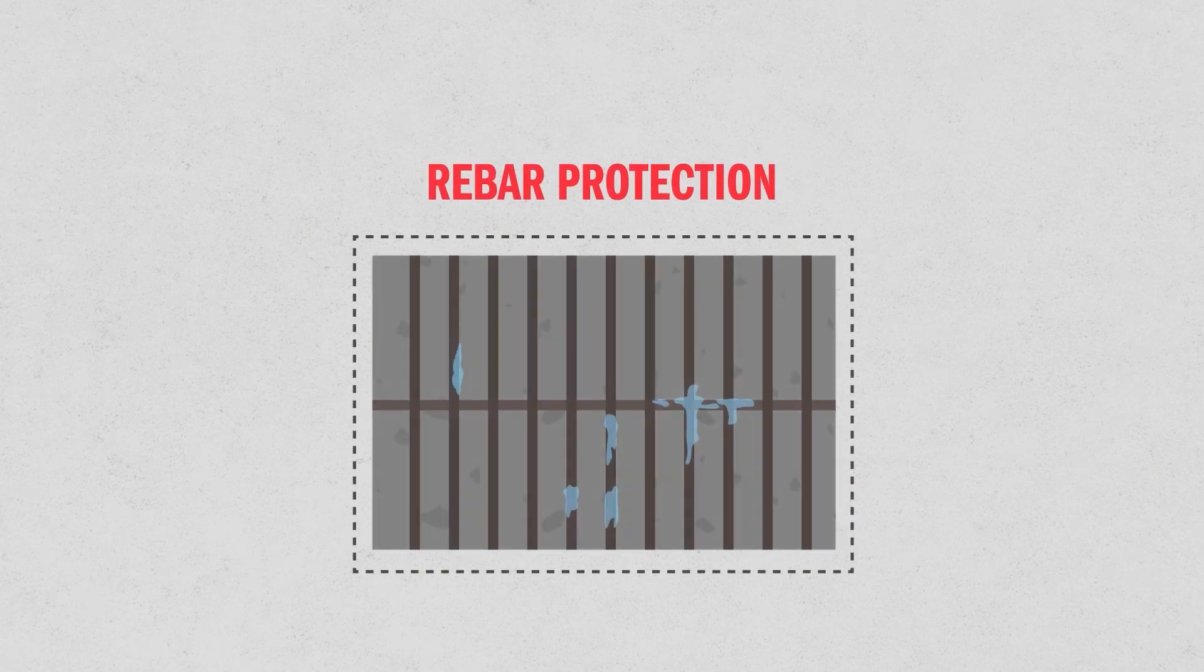By injecting polyurethane resin under pressure, we can encapsulate rebar and slow down the rebar corrosion process. This can greatly extend the life of the structure.